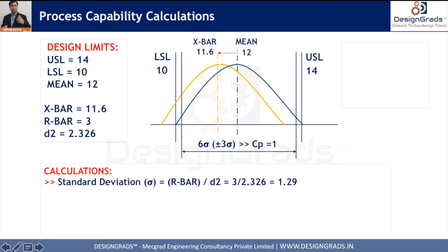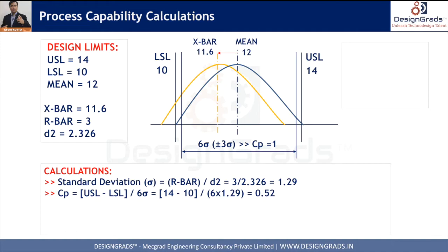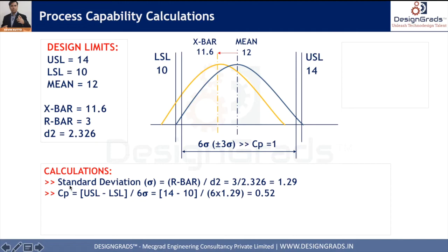Process capability Cp equals (Upper Specification Limit minus Lower Specification Limit) divided by 6 sigma. The key factor controlling Cp is the range. If you want a higher Cp, you must reduce the range by controlling variation in the process. Less variation means a smaller range, a smaller sigma, and a higher Cp — which means fewer parts will be rejected.